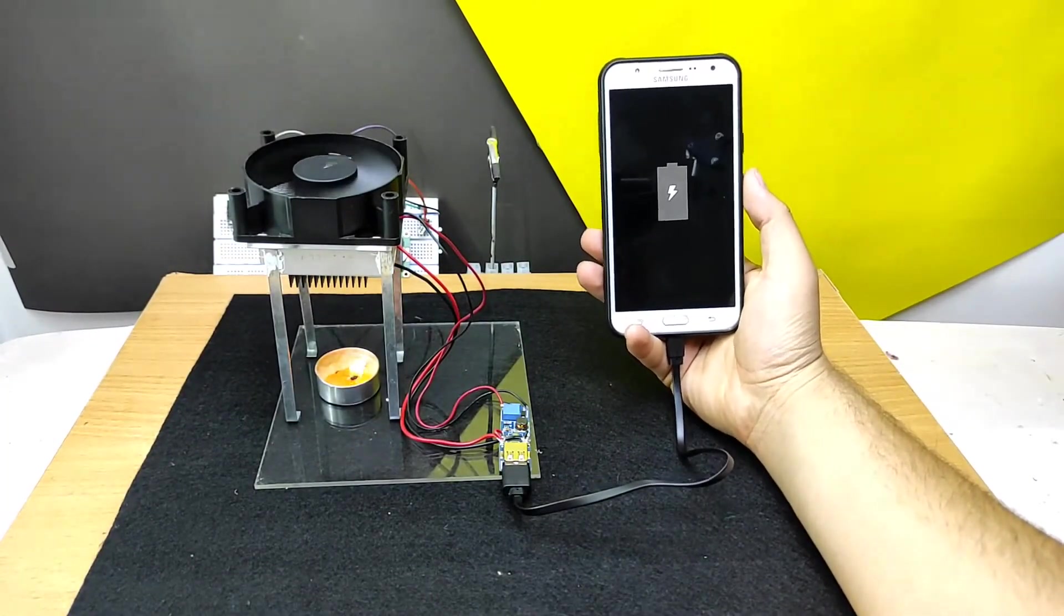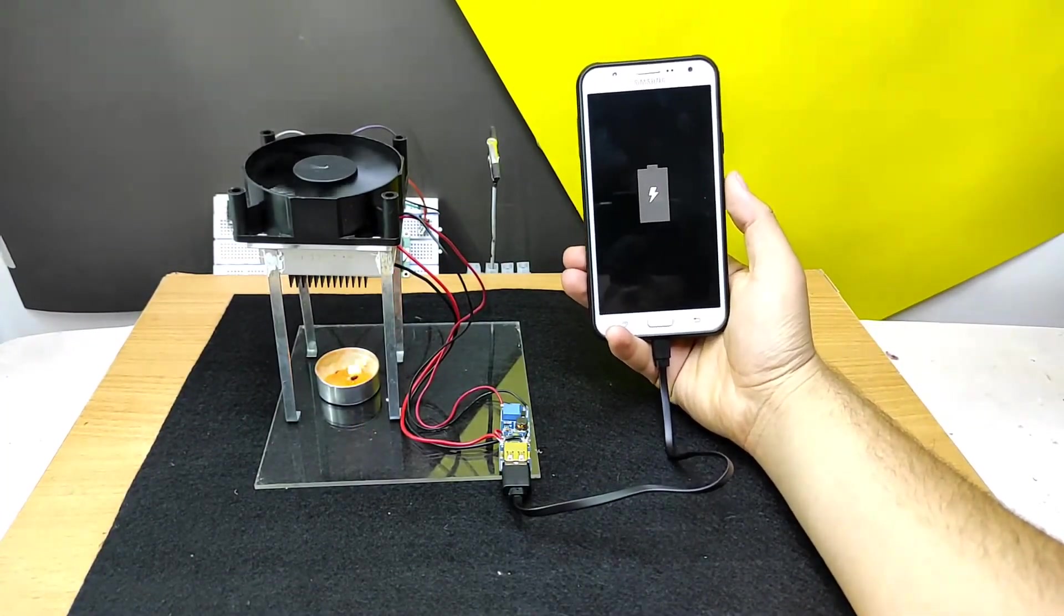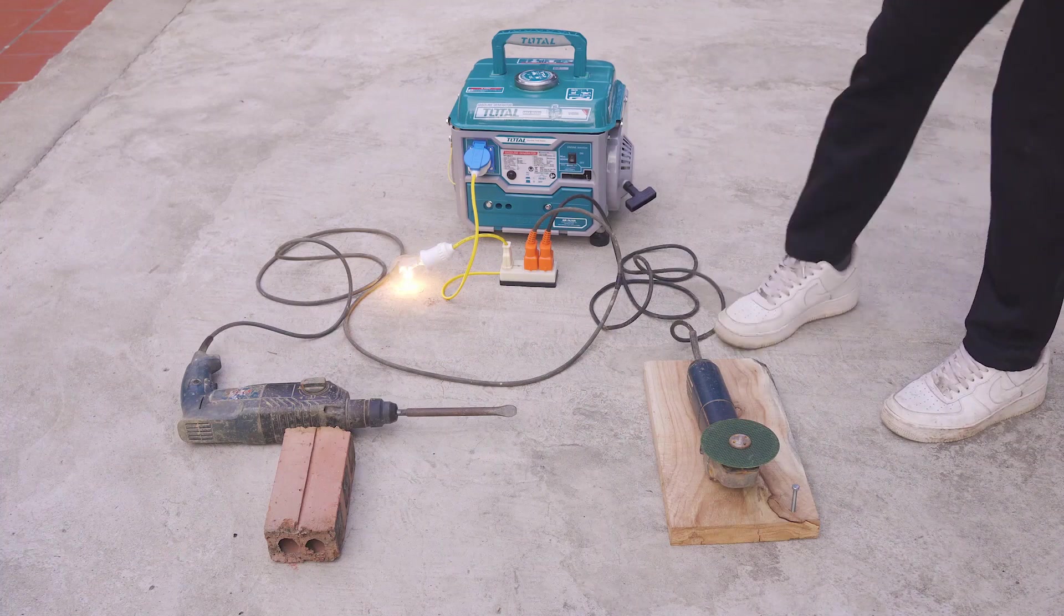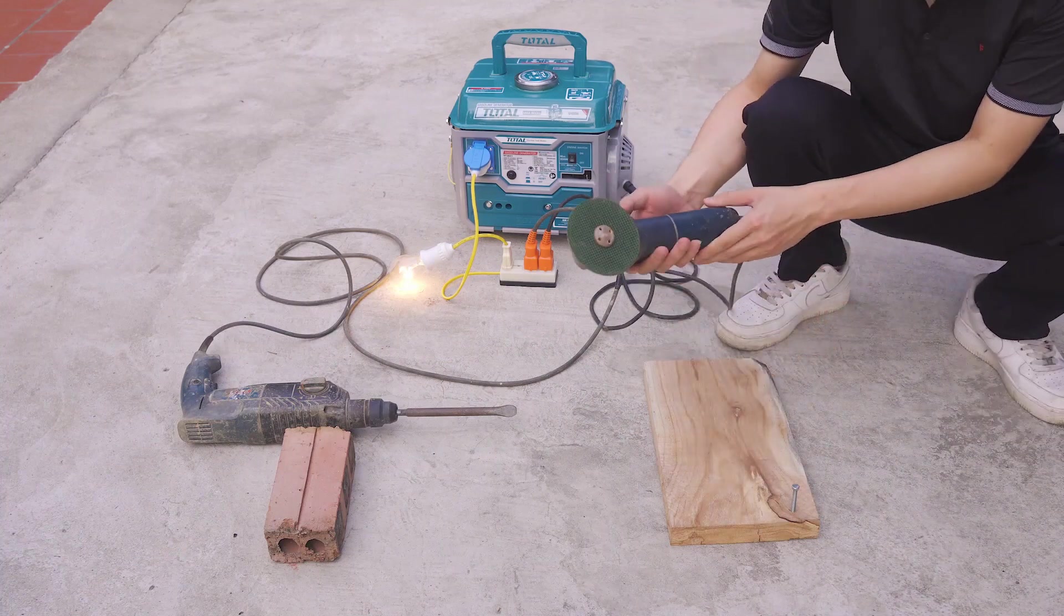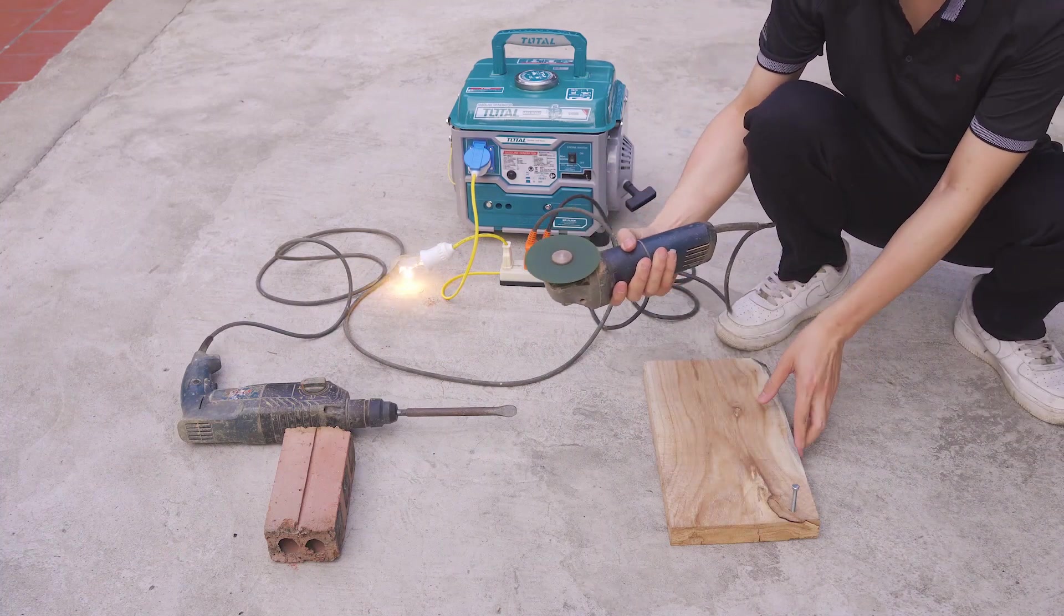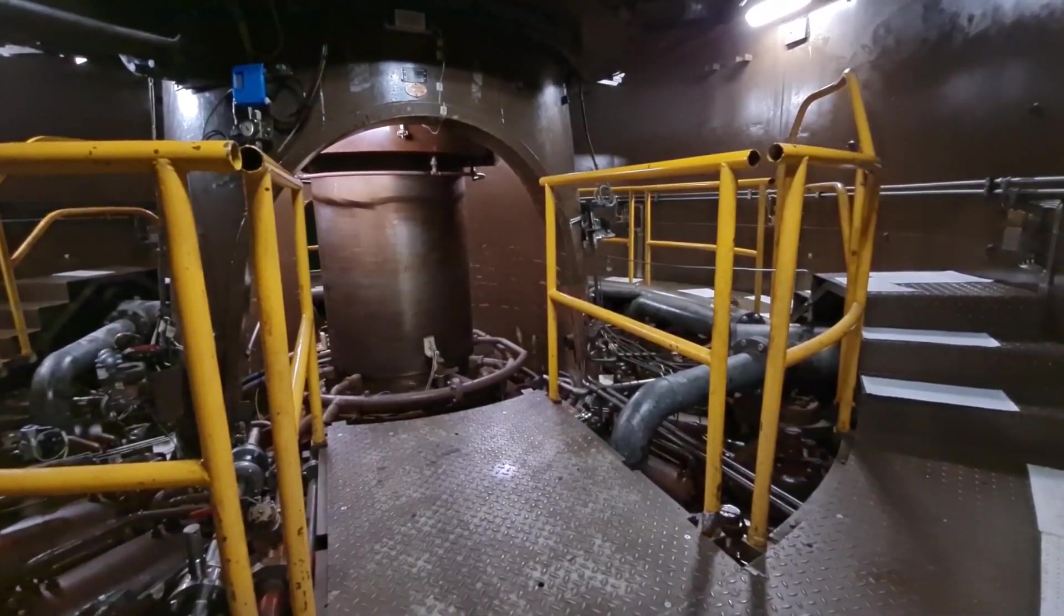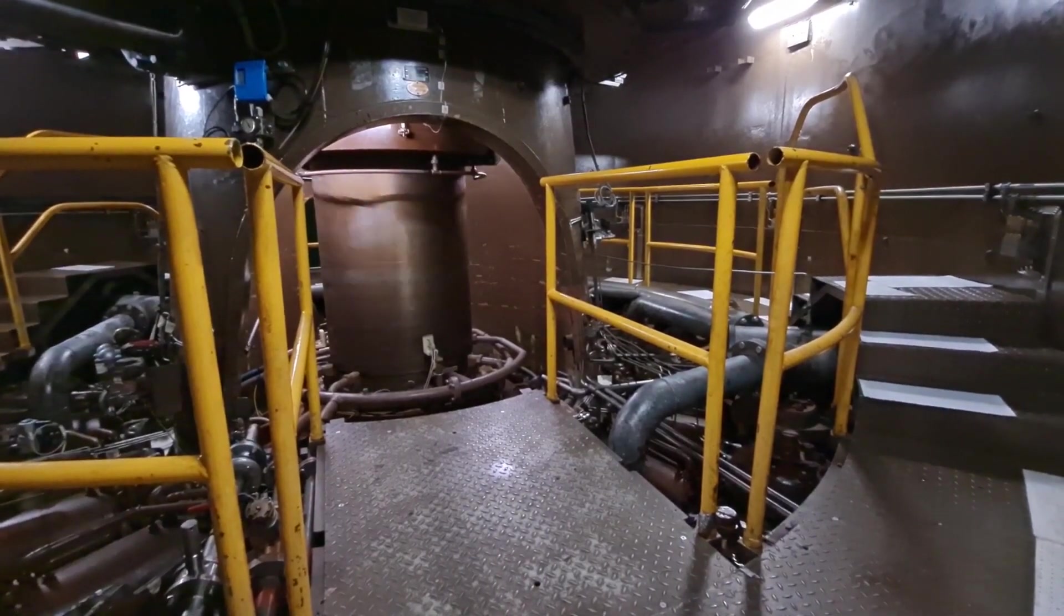However, there are also downsides, the main one being the extremely low efficiency, which usually amounts to a few percent of the heat energy generated. For comparison, classical electric generators based on internal combustion engines have an efficiency of about 30 to 40 percent, and for turbine generators, this figure can reach 60 percent.